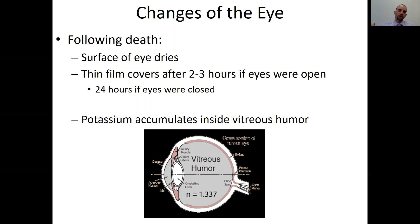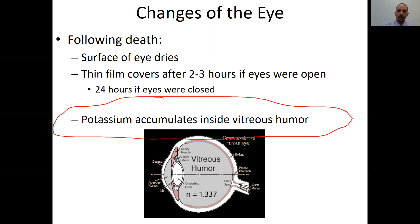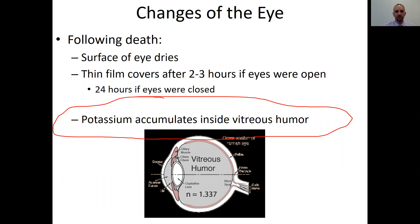We would then use livor mortis, rigor mortis, and algor mortis to get a better idea of time of death. Potassium accumulating inside the vitreous humor — from cell breakdown releasing potassium into the fluid at the back of the eye — can give us a concentration level indicating how long the body has been dead. The higher the concentration, the longer the body's been dead. It's not fully concrete evidence, but it can be used as supporting evidence for time of death.